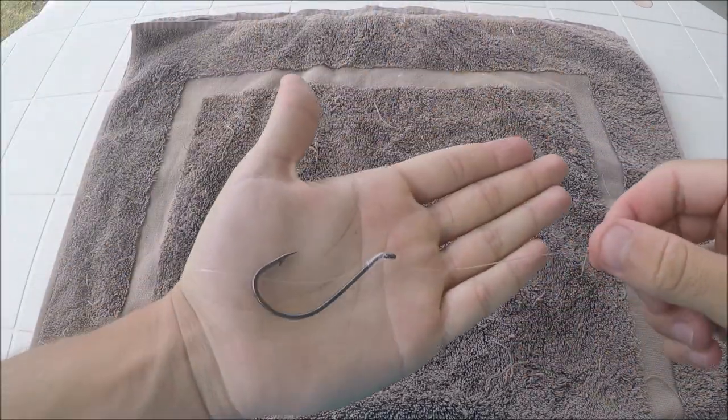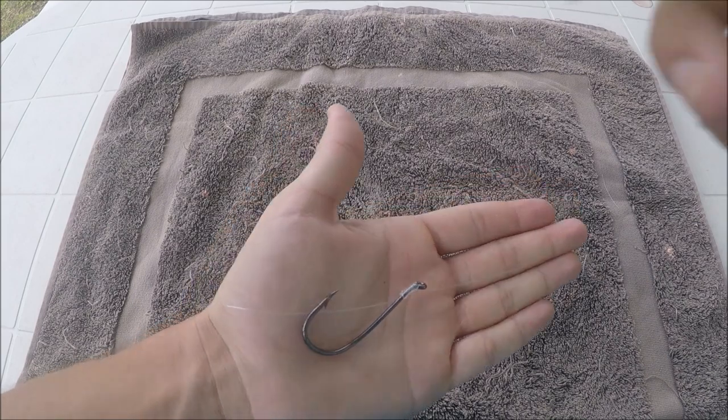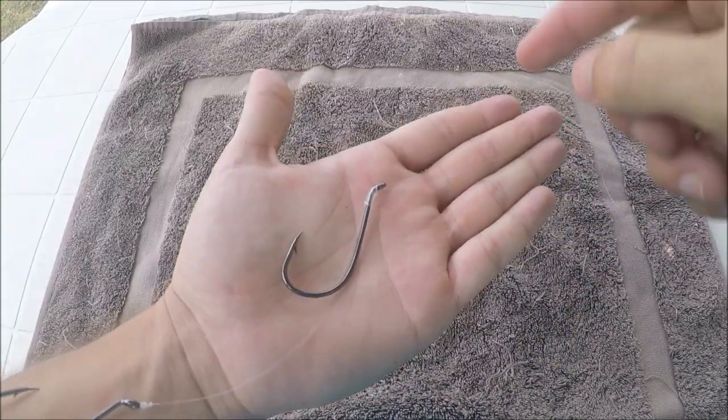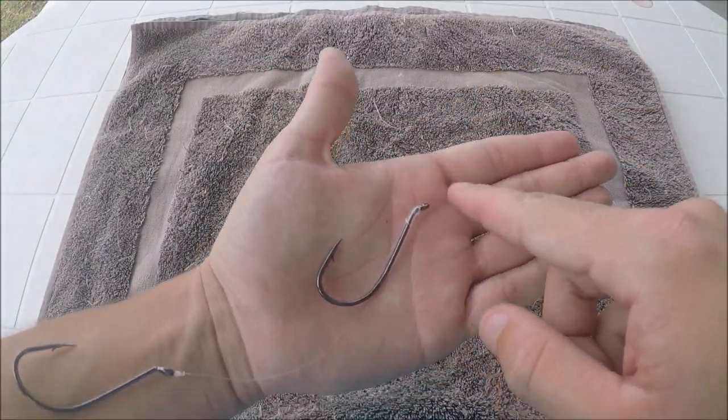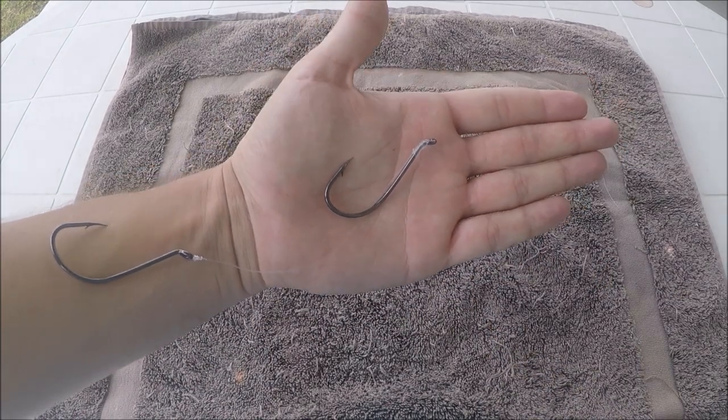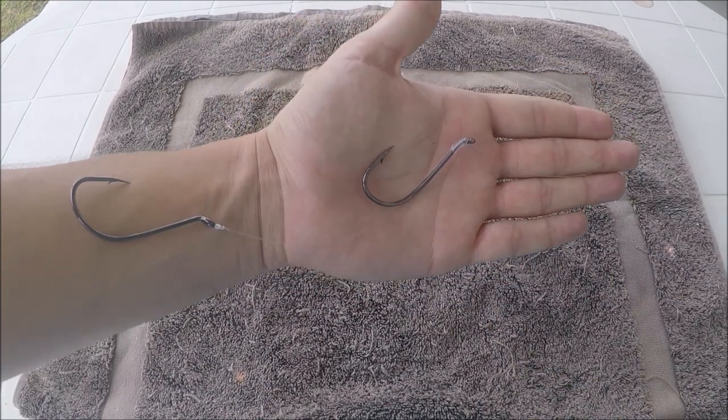Now something you can do is with this top hook if you want you can just add a little sinker to the top here right at the top of this hook. So for example if you're going to float down a big pillie or a slimy mackerel or something.